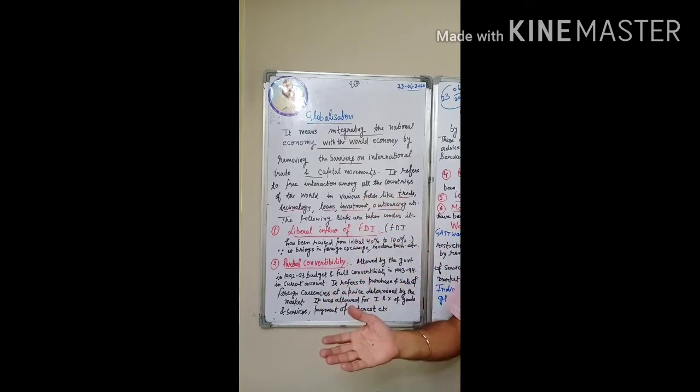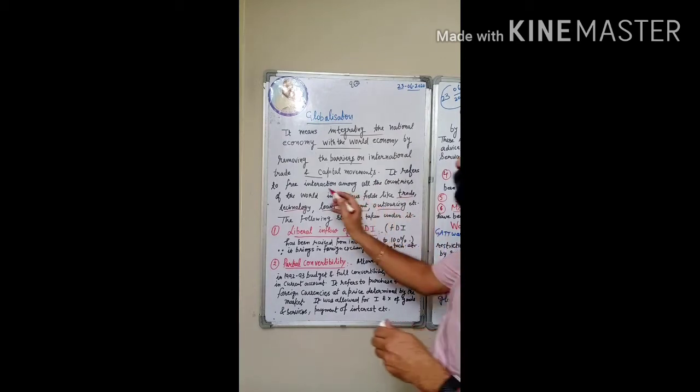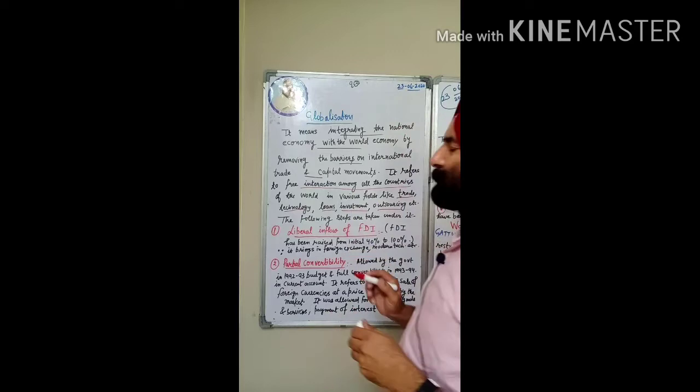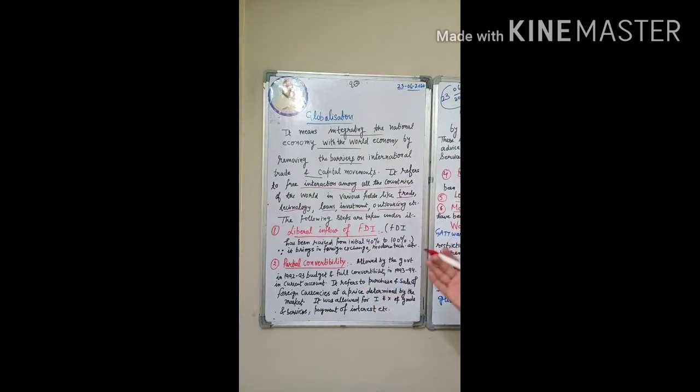It refers to free interaction among all the countries in the whole world. You have free interaction in what terms? Trade, technology, loans, investment. Trade means exporting goods. Our country will invite foreign companies and our domestic companies will go out and invest. Foreign direct investment, outsourcing, etc.